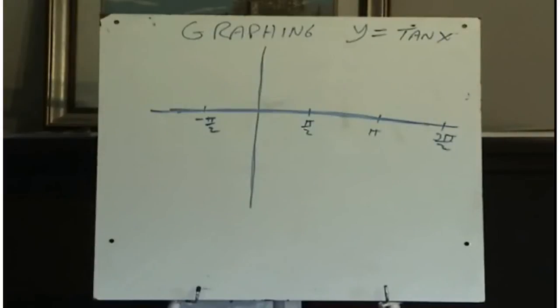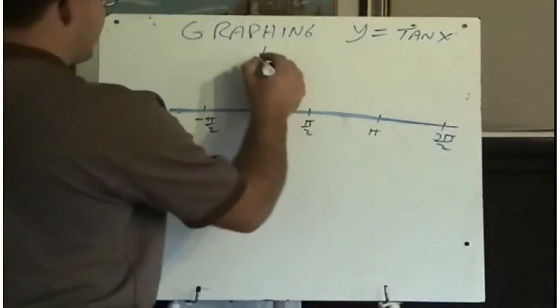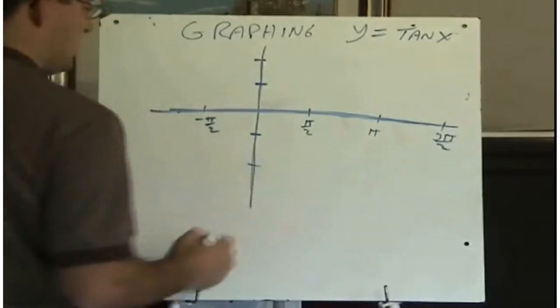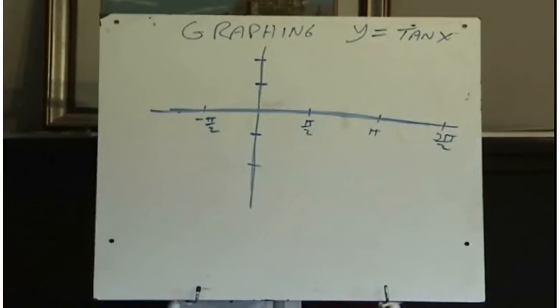If we take a look at tan x, the graph y equals tan x, if we did a table of values, we're going to see that this graph looks quite a bit different than sine and cosine.